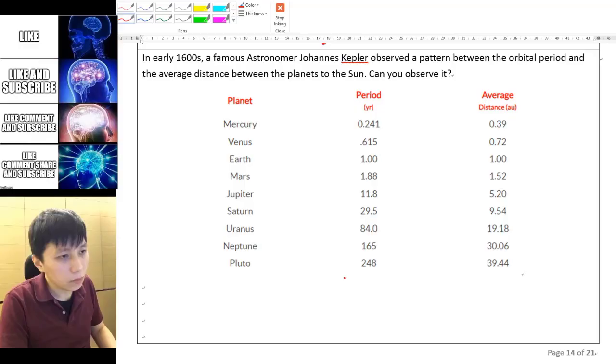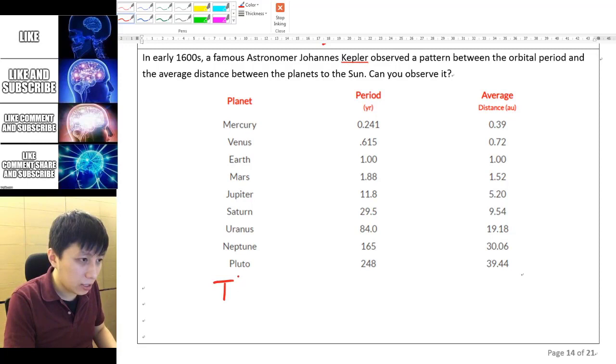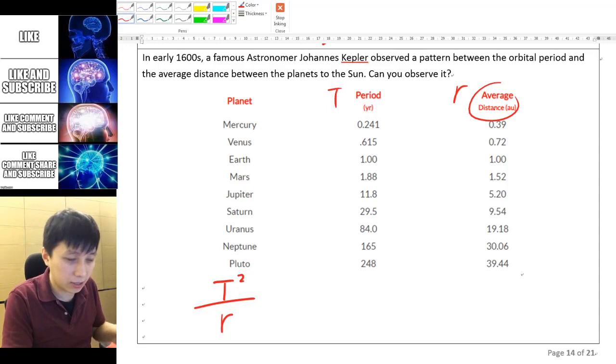The answer is actually T squared, which T of course is the period, over r, which is like the distance that we just talked about, to the power of 3, and that should equal to a constant.